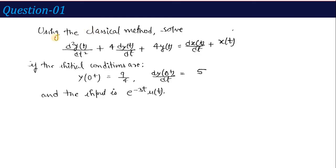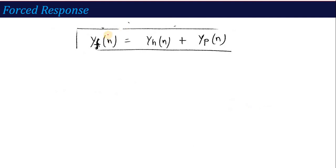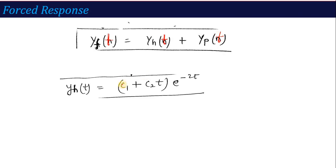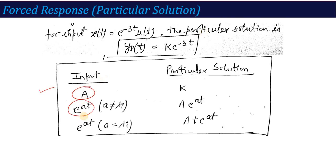Now, what is the second type of response? The forced response. The forced response is calculated using the formula: forced response = homogeneous solution + particular solution. The homogeneous solution is already derived as (C₁ + C₂t)·e^(−2t). Now we need the particular solution.